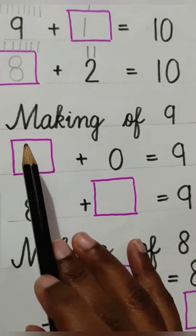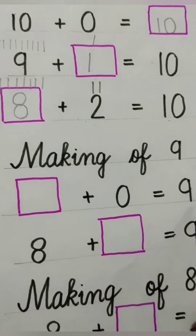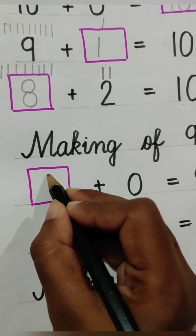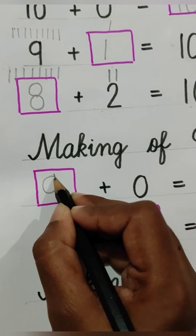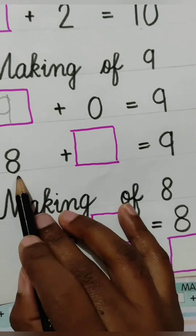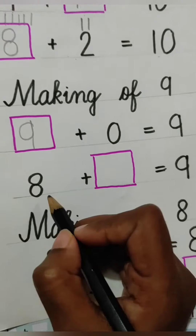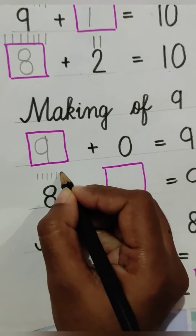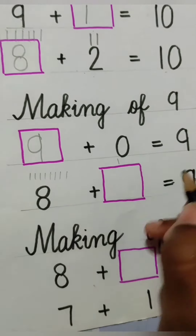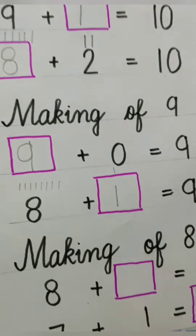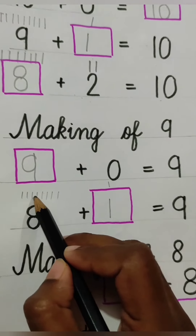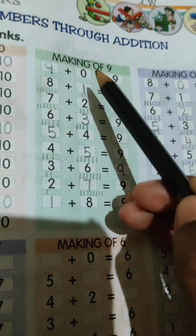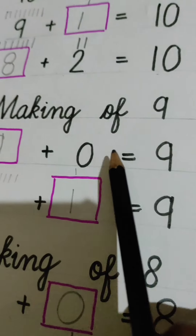Making of 9. अब हम लोग numbers को add करके 9 बनाना सीखेंगे. किस में 0 add करने से 9 बनता है? 9. जब हम लोग 9 में 0 add करते हैं, तब हमारा बनेगा 9. 8 plus blank is equal to 9. 8 में कितना add करने से 9 बनता है? Draw 8 lines then 1 more up to 9. 8 में 1 add करने से 9 बनता है. So children, first two questions I have explained here.